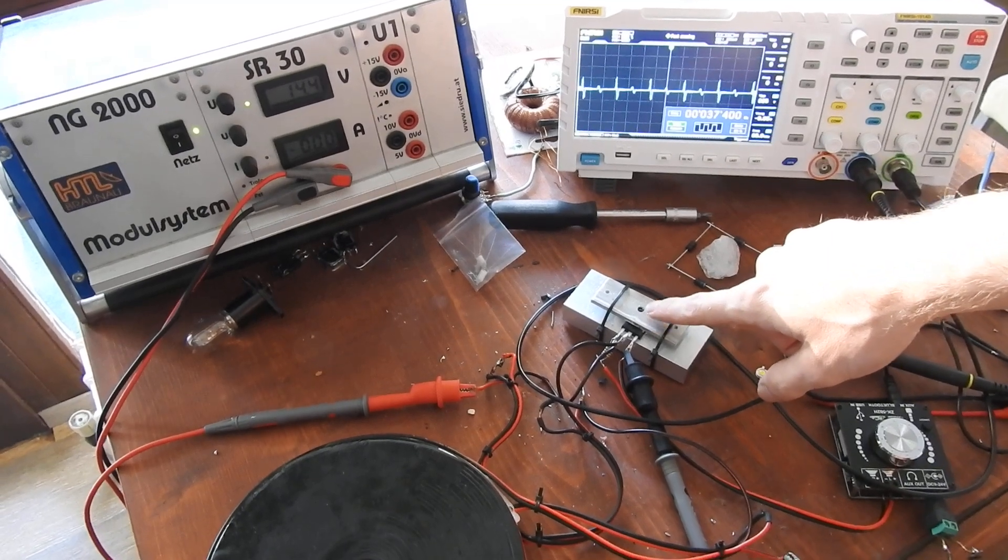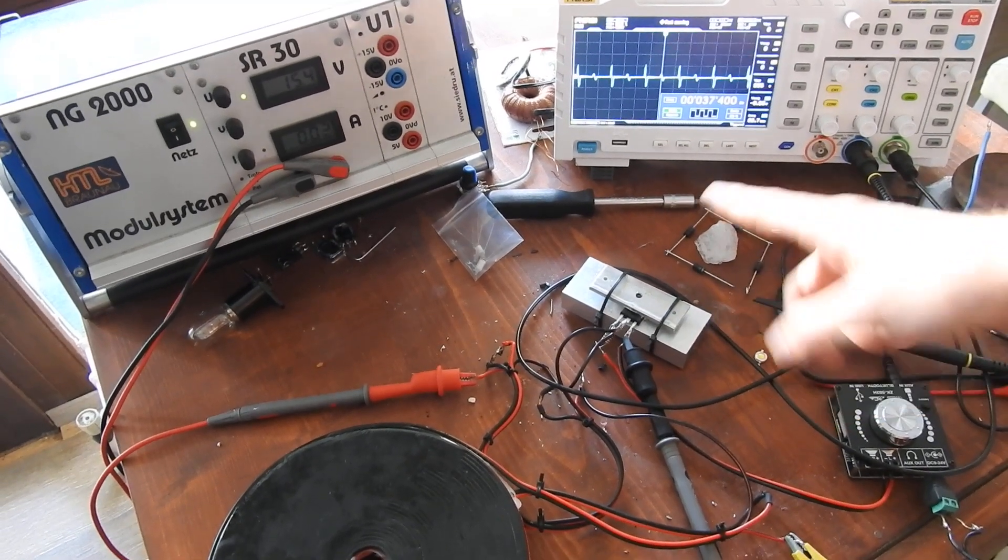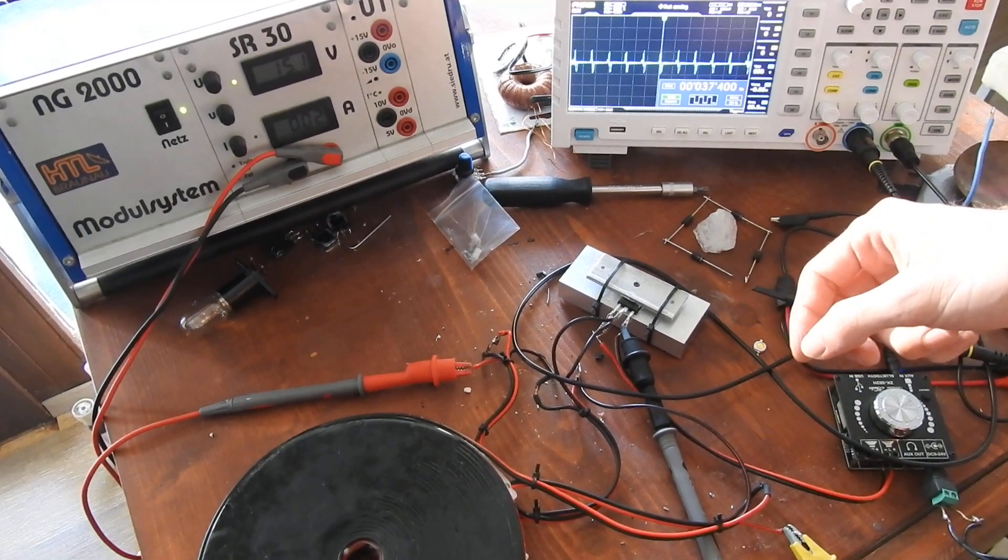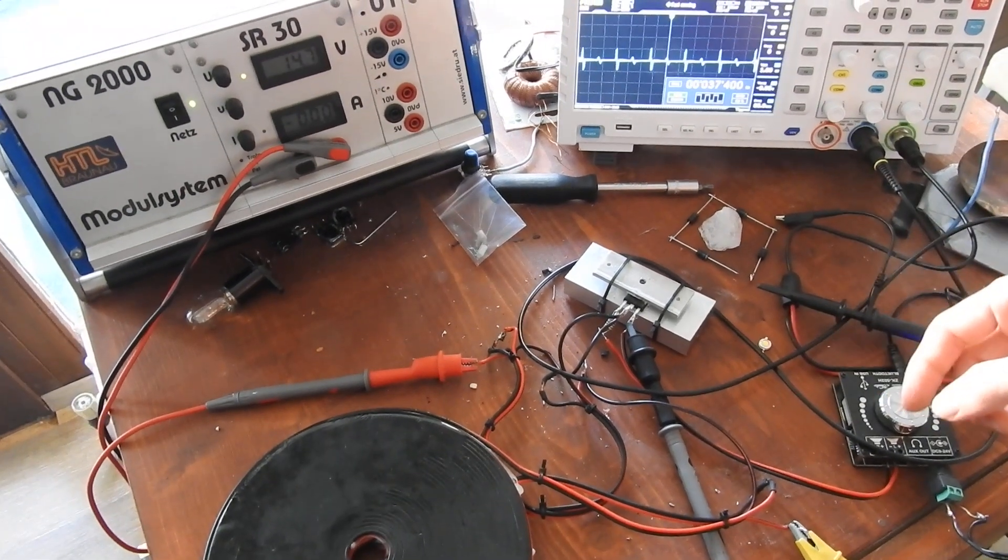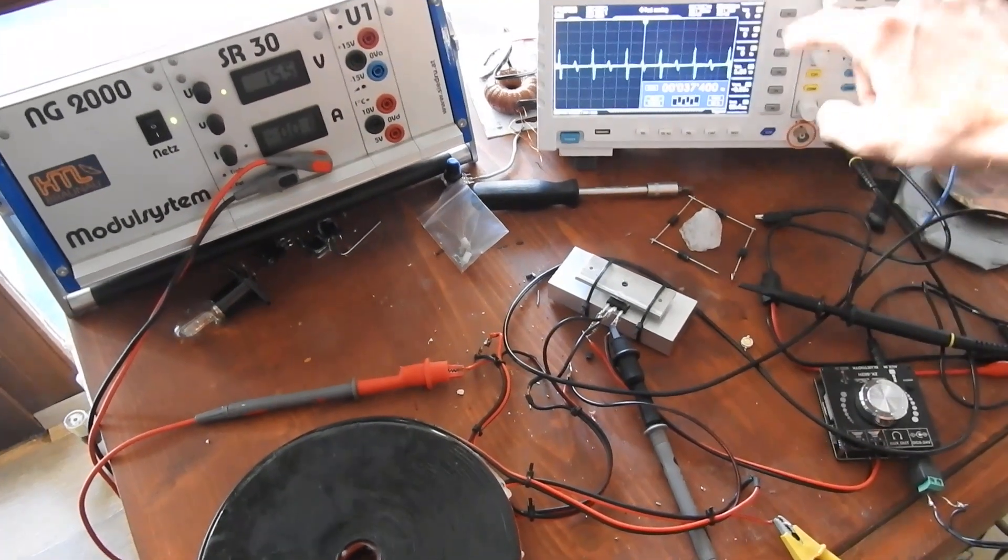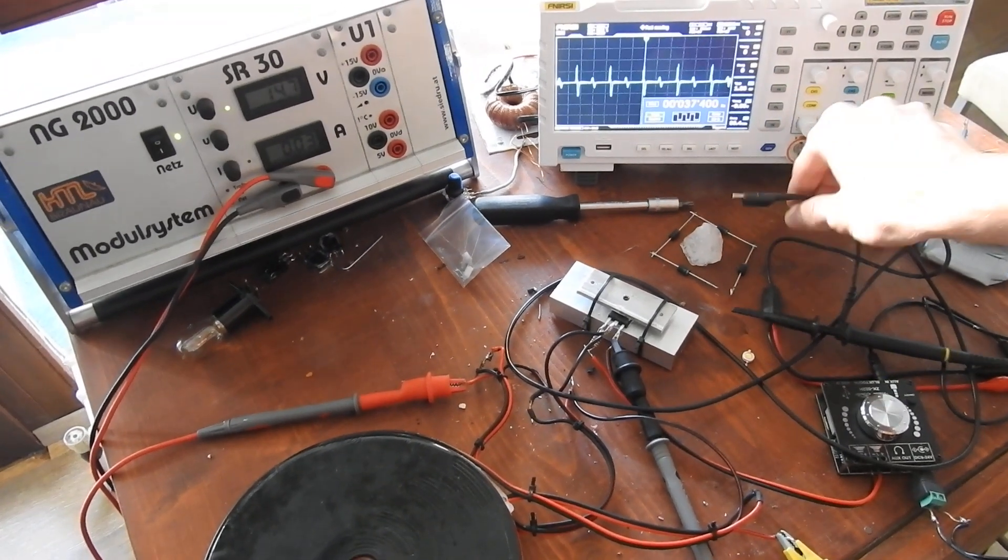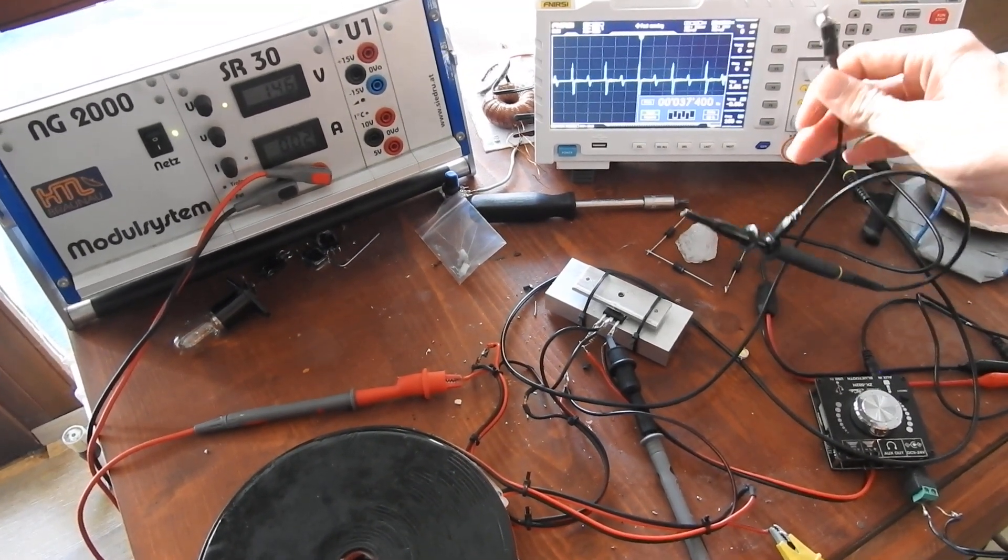This MOSFET is doing the switching. When it switches this DC voltage, very high voltage impulses get generated. What you see on the oscilloscope is just what the probe picks up when it is not connected.